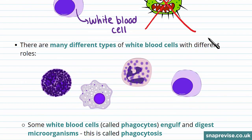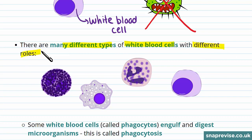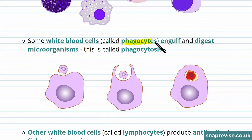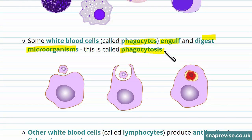There are actually many different types of white blood cells, and these all have different roles. Some white blood cells called phagocytes engulf and digest microorganisms. This is called phagocytosis.